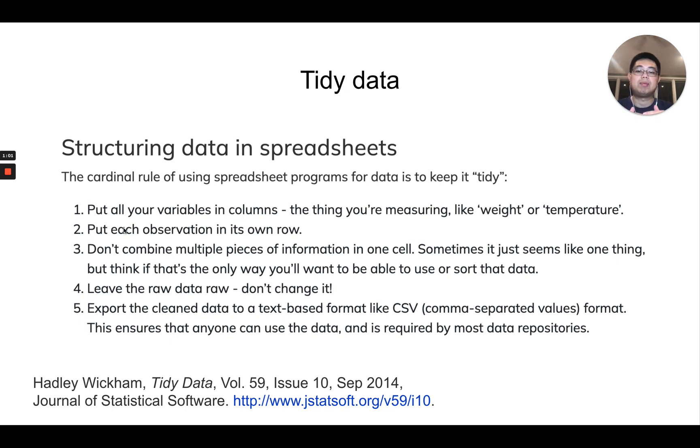First, you want to put all your variables in columns - the things you're measuring like weight, height, temperature. Second, put each observation in its own row. Third, don't combine multiple pieces of information in one cell. Fourth, leave the row data raw - don't change it. You can do calculations in Excel for yourself, but when you send data to your collaborators, make sure it's raw data. Lastly, export the cleaned data to a plain text-based format such as TSV or CSV file.